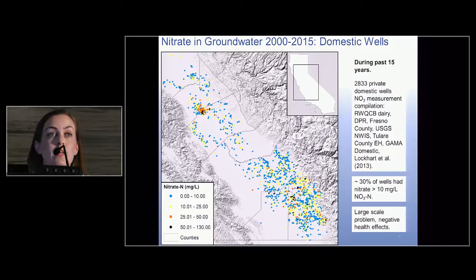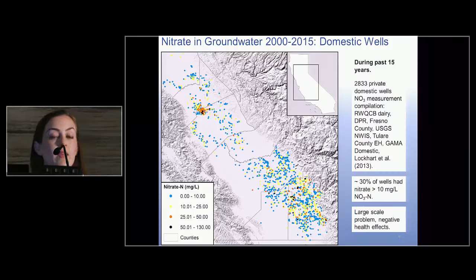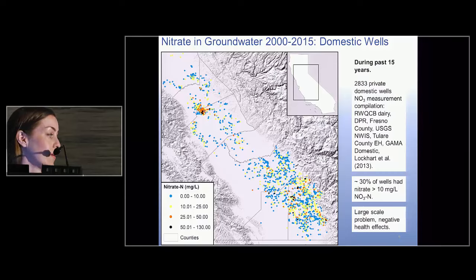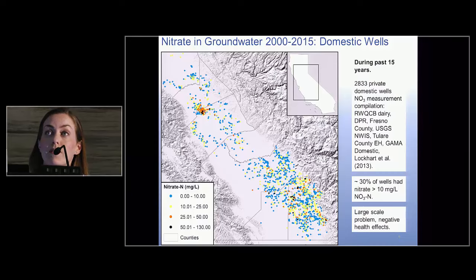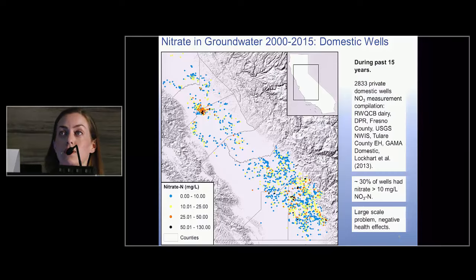Many of these people are aware they have a problem. It's a very large-scale problem with some negative health effects. On the visualization, black indicates above 50 milligrams per liter nitrate-nitrogen — five times the drinking water standard — orange is 25 (two and a half times), and yellow is 10. Anything yellow, orange, or black is in exceedance of the drinking water standard. So quite a few wells are affected.